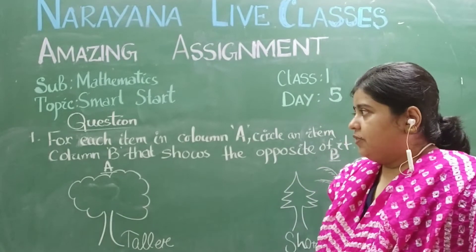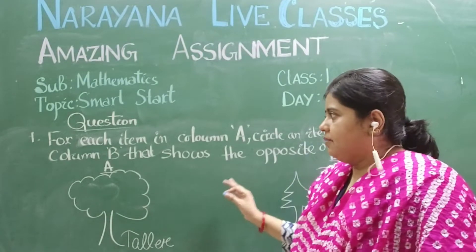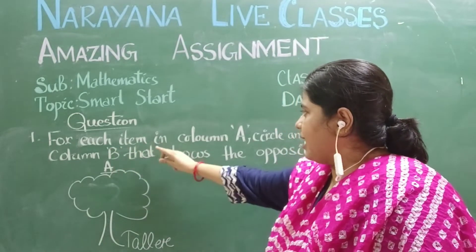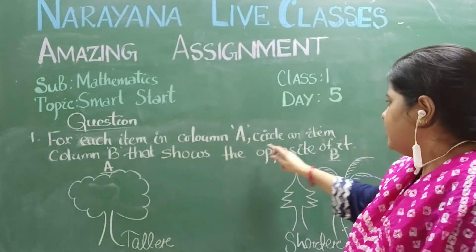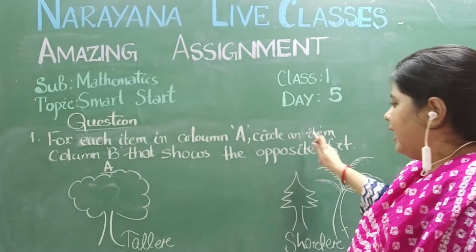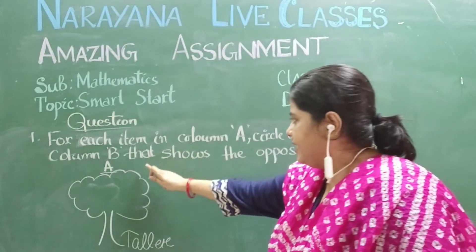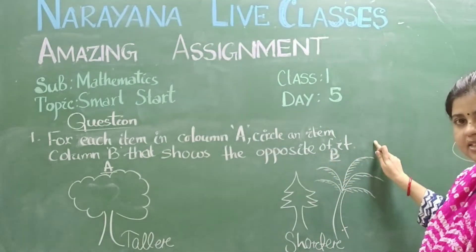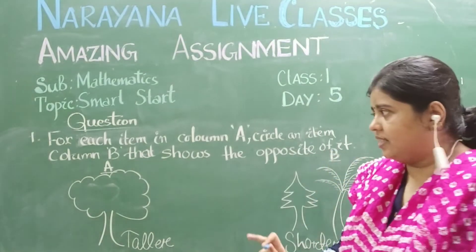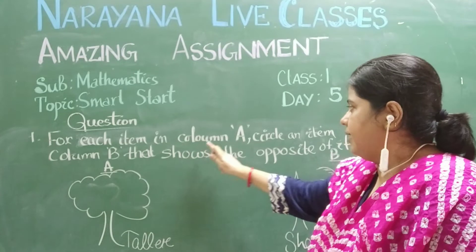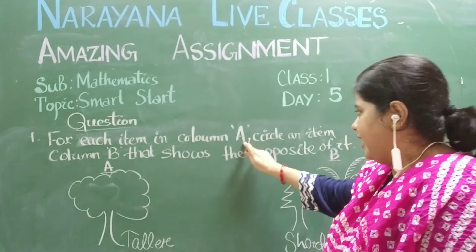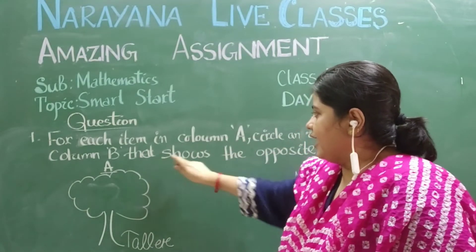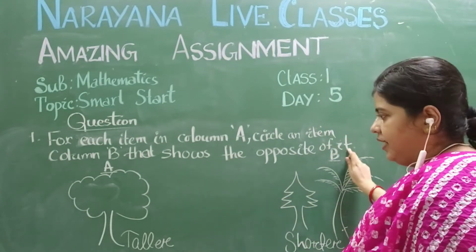The first question in the assignment paper, question number 1: for each item in column A, circle an item in column B that shows the opposite of it. Did you understand the question? For each item in column A, circle an item in column B that shows the opposite of it.